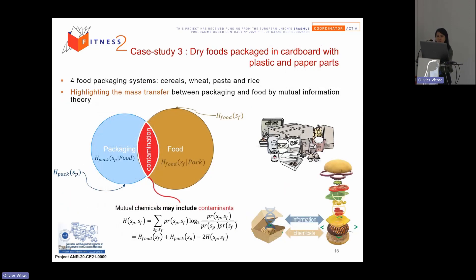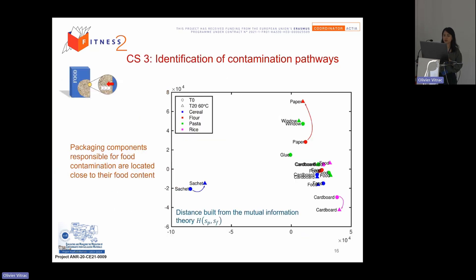And for the last case study, in all the project, we have now one national project on the recycled paperboard. And we try to use the same theory to highlight the mass transfer between packaging and the food. So normally what we expect is that we have the information of packaging. We have the information of food and maybe the mutual information correspond to the contaminant or to the mass transfer of migrations.